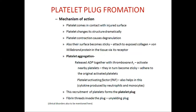The platelet plug formation involves the aggregation of platelets. When platelets come in contact with the damaged vessel wall, they change their shape drastically — they become irregular in shape and send out pseudopodia in all directions. The contractile filaments such as actin, myosin, and thrombosthenin contract forcefully, causing degranulation. The surface becomes sticky and attaches to the exposed collagen plus the von Willebrand protein that leaks from plasma into the tissues. Thromboxane A2 combines with ADP to increase the stickiness of platelets with the vessel wall. Platelet activation factor also plays an important role in the formation of platelet plugs.